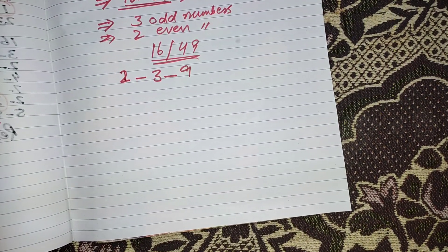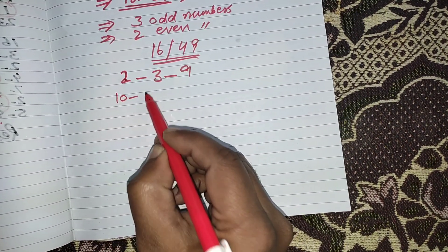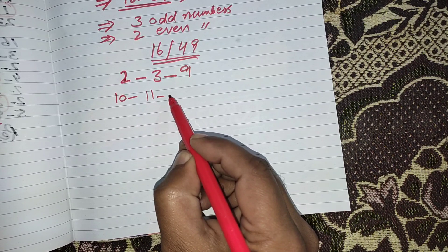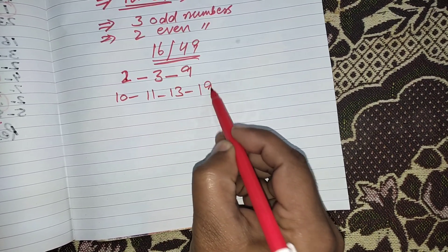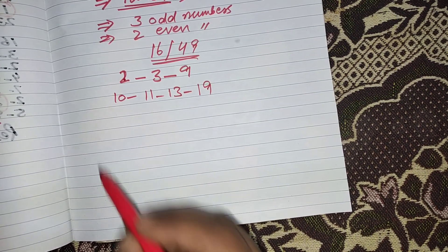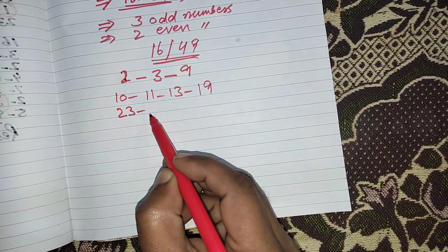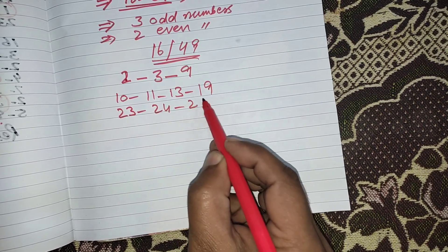From 10 to 19 I have 4 numbers: 10, 11, 13 and 19. From 20 to 29 I have 3 numbers: 23, 24 and 25.